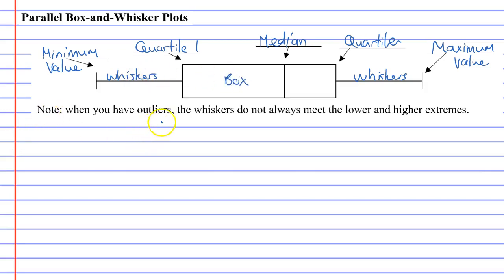Little note here: when you have outliers, the whiskers do not always meet the lower and higher extremes. We'll talk about that later on as we do our examples.